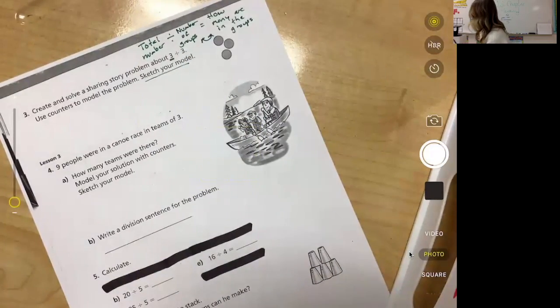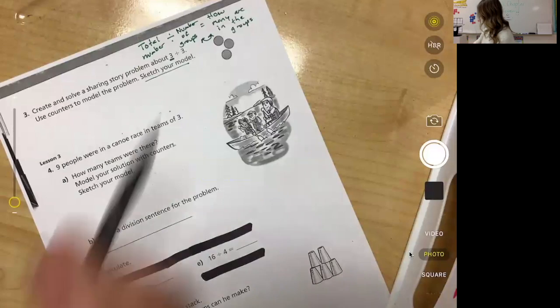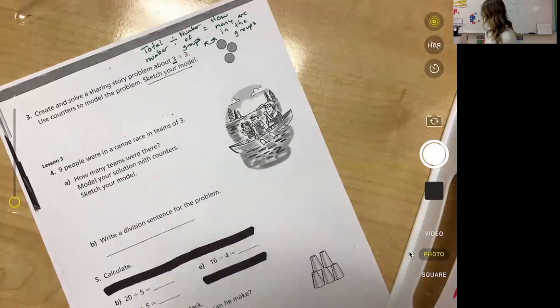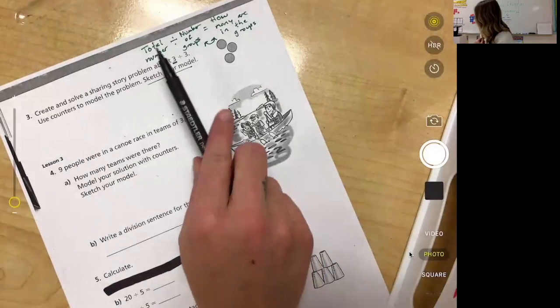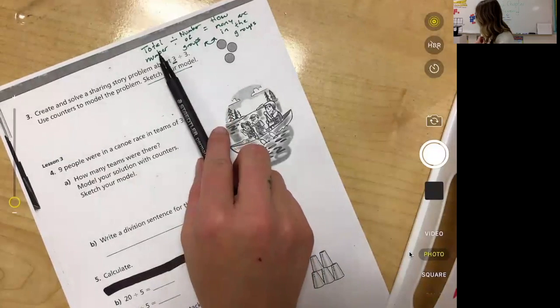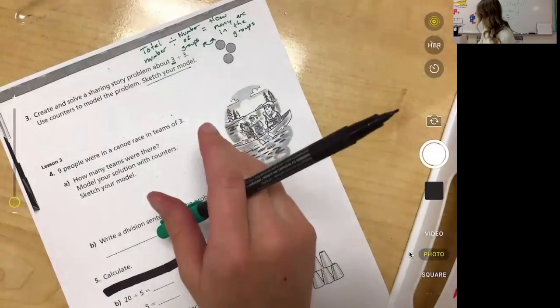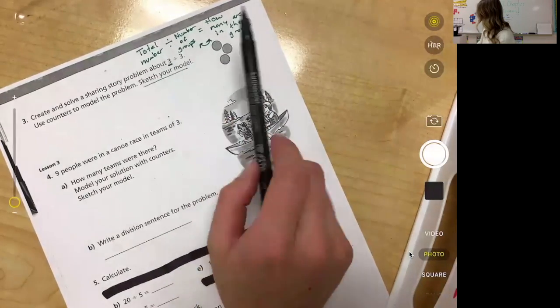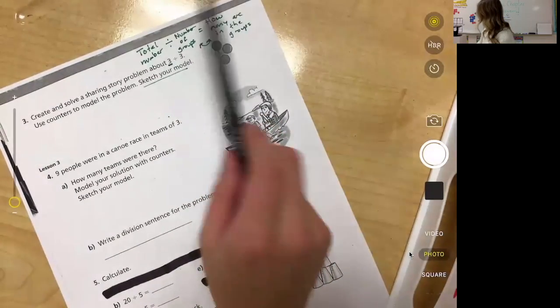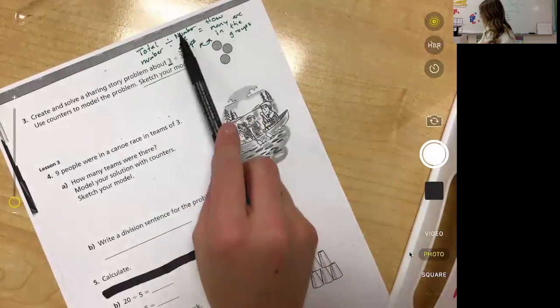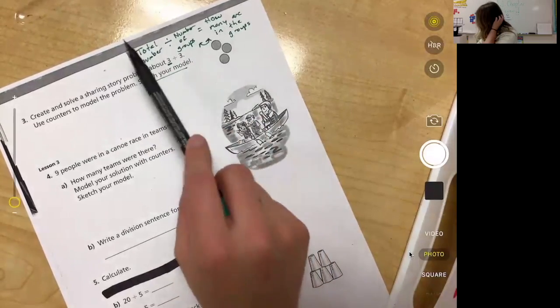So you could say Miss Crystal had three Oreos, she gave them to three kids. The kids are the groups, how many do each kid get? Or Miss Crystal had three pencils, she put them on three desks, how many pencils were on each desk? Something like that. Remember you have to talk about your total number, you have to talk about groups, and you have to talk about how many are in the group. The total number always has to be talked about in your story problem.